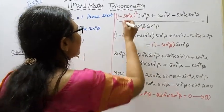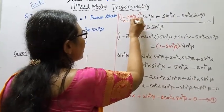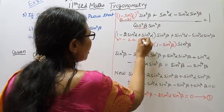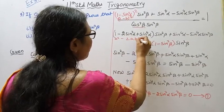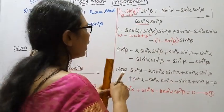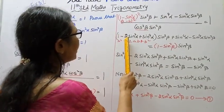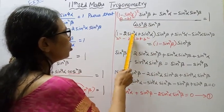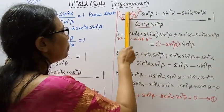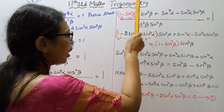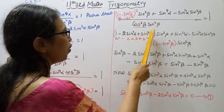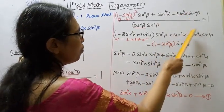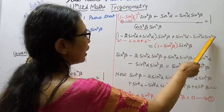Using the identity: it is a minus b the whole square, which equals a square minus 2ab plus b square. So applying a minus b the whole square: 1 minus 2 sin square alpha plus sin square alpha the whole square, that is sin power 4 alpha, multiplied by sin square beta.